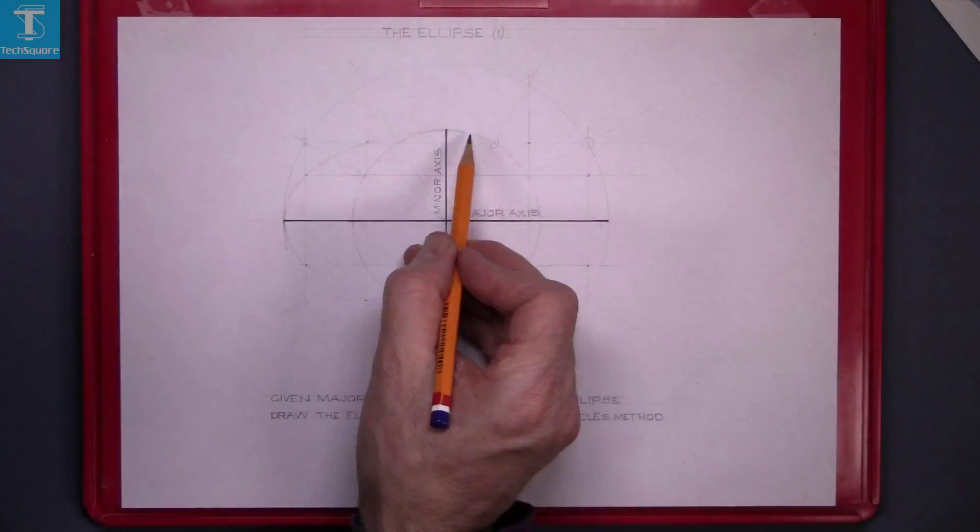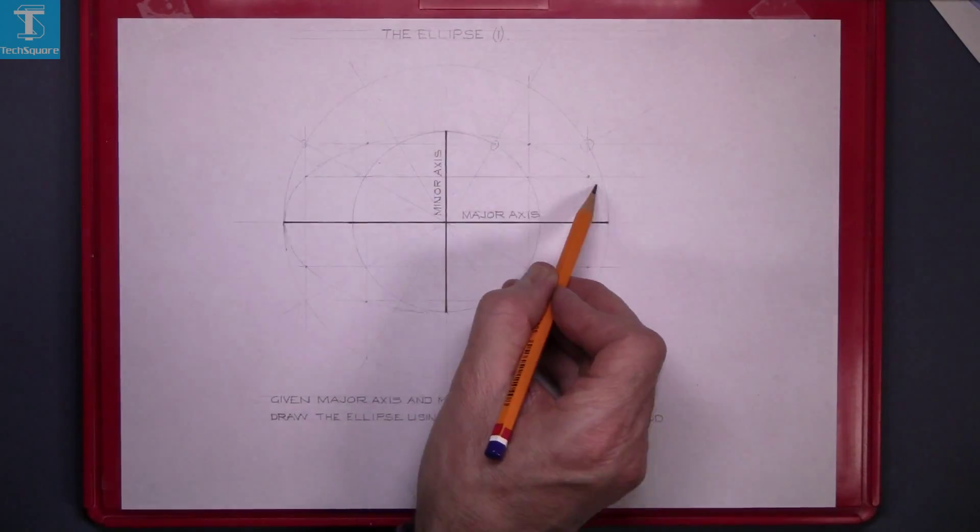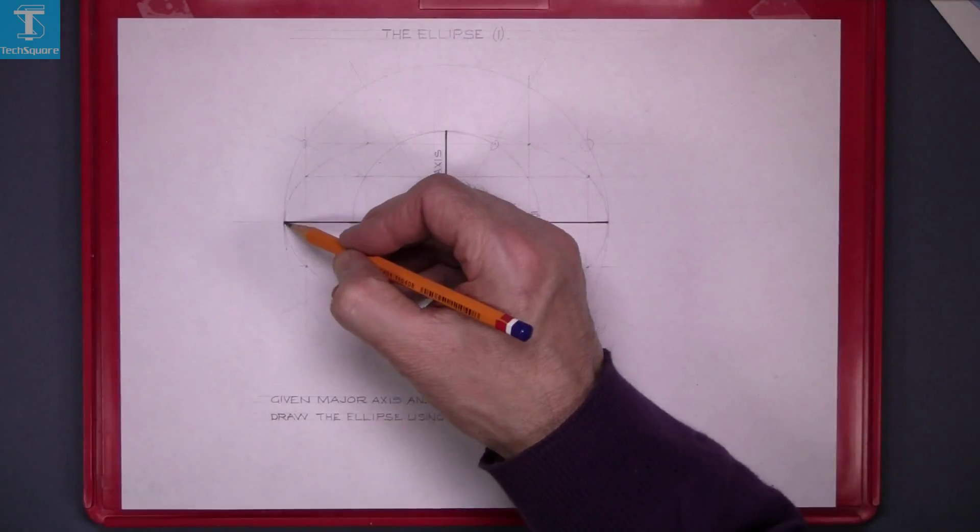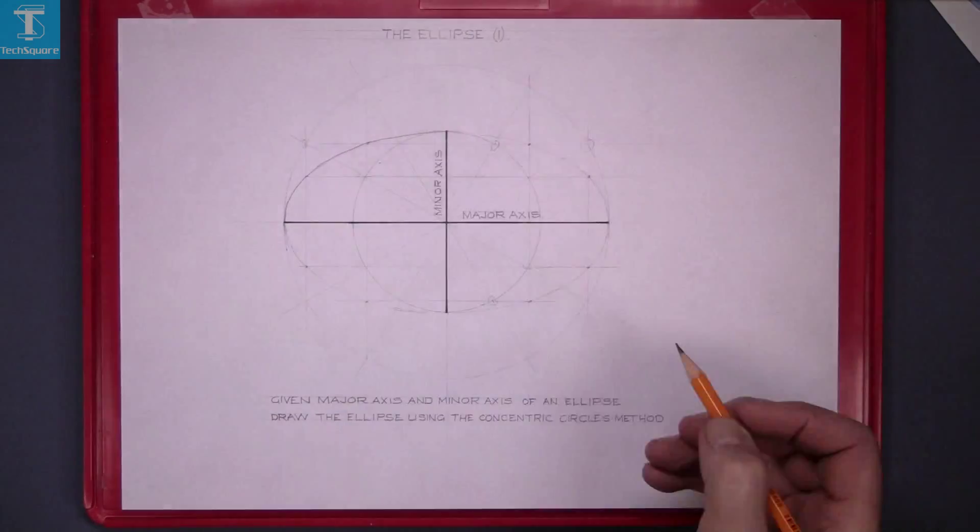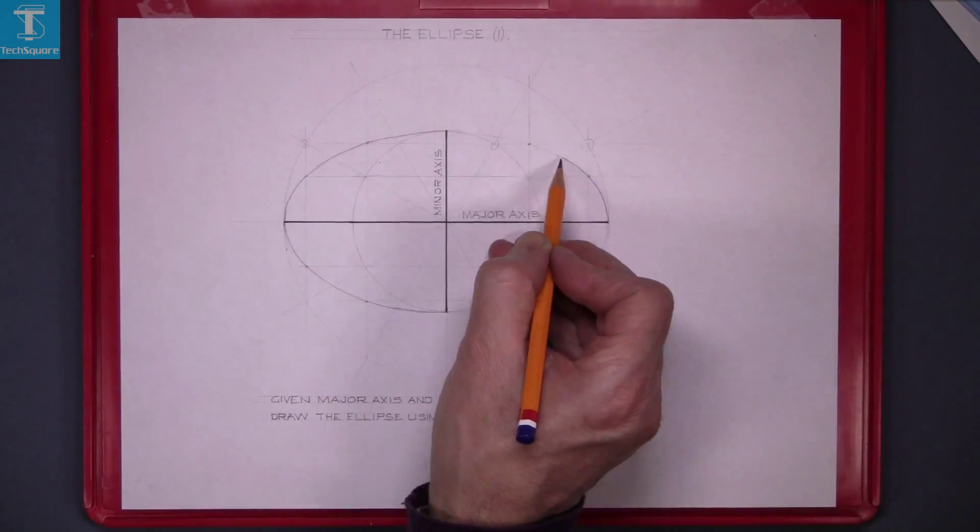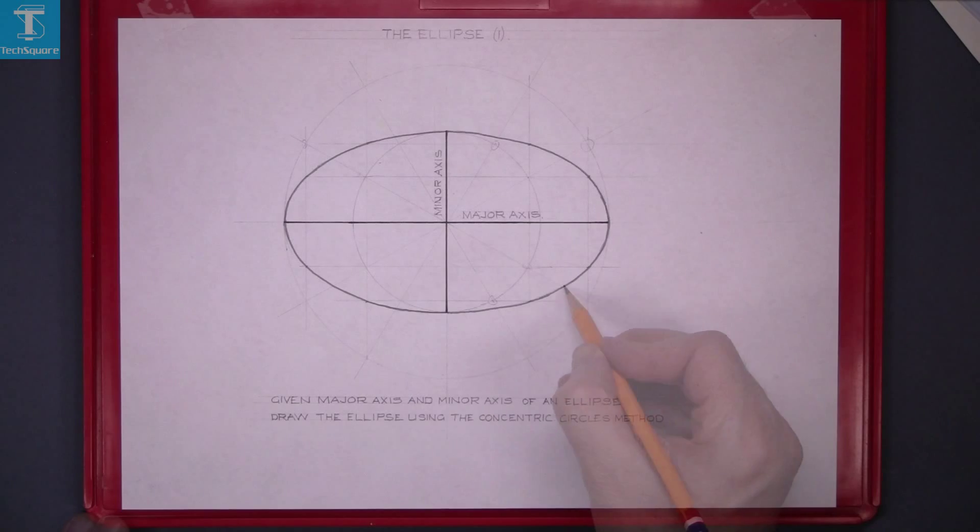Now freehand draw in lightly and then line in your ellipse. And that's your first ellipse drawn.